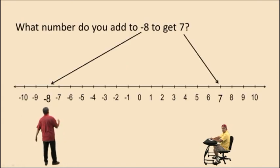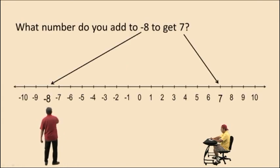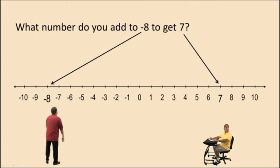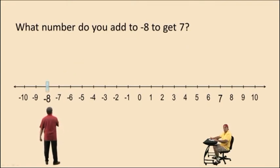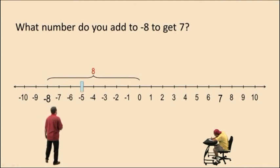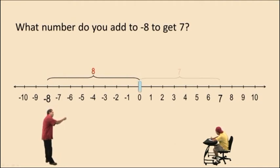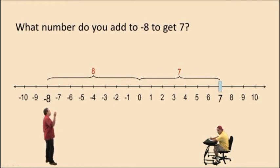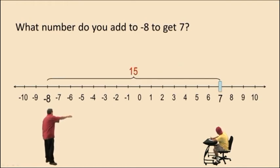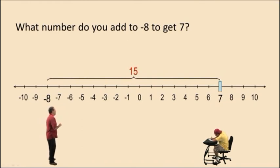Let's do another one here. What number do you add to negative 8 to get positive 7? Let's start at negative 8 and we're trying to get to positive 7. So let's first move 8 units to get us to 0. And to get to 7, we still have to move 7 more units. Notice, we moved a total of 15 units to get from negative 8 to positive 7.